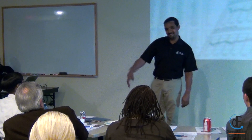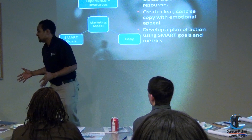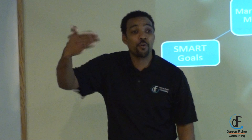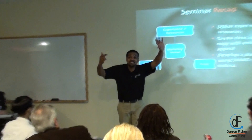Recap: look at your experience and your resources, look at your history, look at whatever your copy is of your marketing, look at your SMART goals. Develop this model — by measuring it, you can create and get better over time. The principles you follow will remain, but how you apply them is going to change. The key is just to have a process, review it, edit it, revise it, make it better, and have goals for your processes. An effective marketing model includes defined goals, a target market, a structured process, and a splash of creativity.